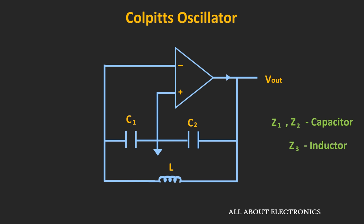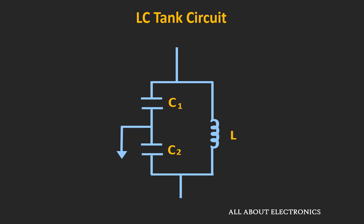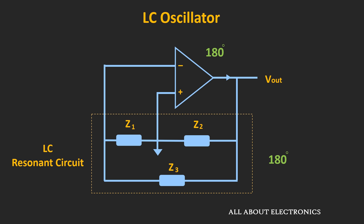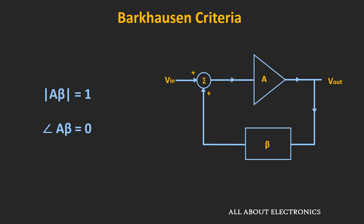This is a basic block diagram of the Colpitts oscillator. Either a transistor or an op-amp can be used as the amplifier, while the LC tank circuit is on the feedback path — consisting of two capacitors and one inductor. In general, the feedback circuit provides 180 degrees of phase shift, and the remaining 180 degrees is provided by the amplifier, so the overall phase shift is 0 degrees. The loop gain of the circuit is set to unity to obtain sustained oscillations.